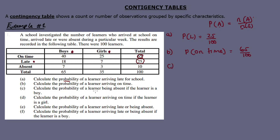C: calculate the probability of a learner being absent if the learner is a boy. This time they are specific, so we focus only on the boys column. Absent boys equals 7 out of 65 boys total. So the probability equals 7 over 65.